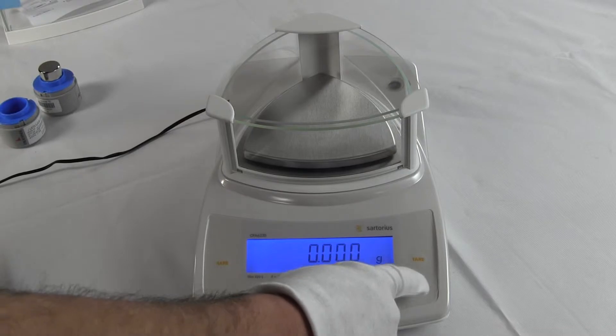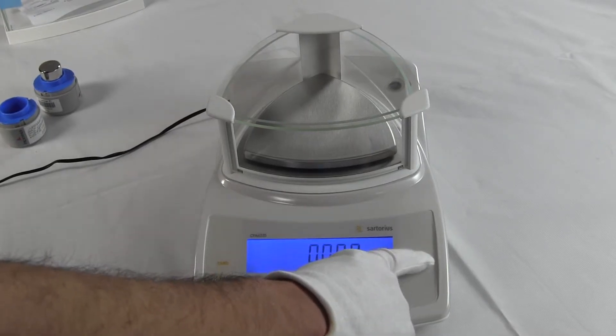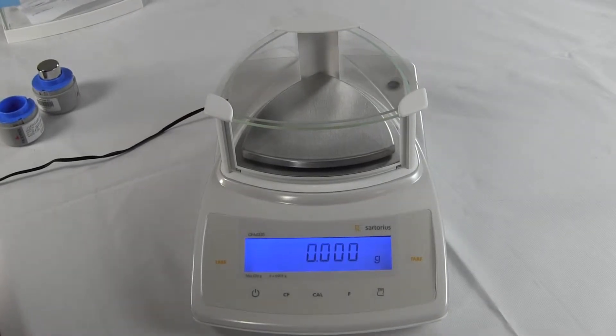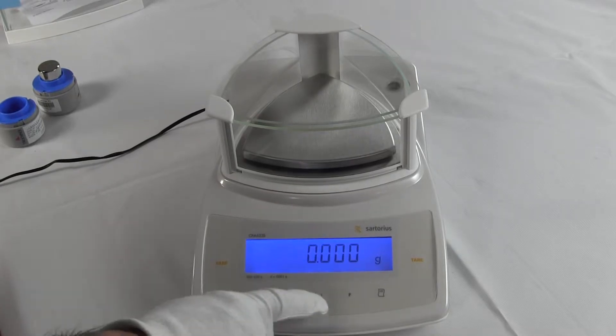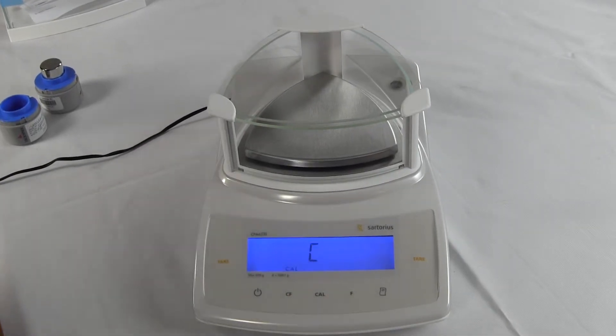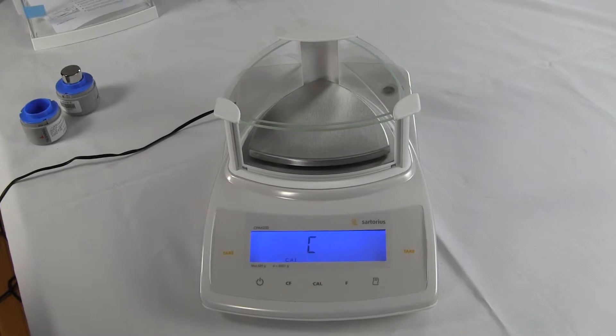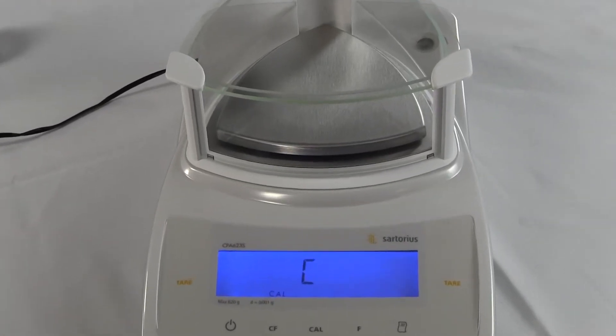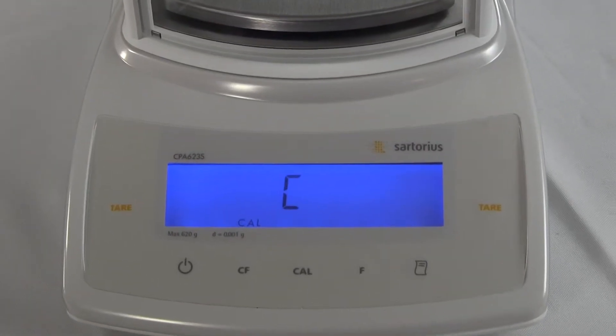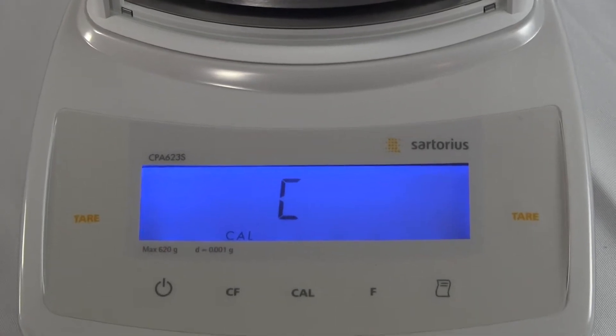I already leveled the balance. The spirit bubble in the rear. And so I'm going to press the tare button to tare out the balance. And to perform a calibration, one simply presses the CAL key. You'll notice the letter C. Then afterwards, it will say CC. And the calibration will be completed. It takes a few minutes.